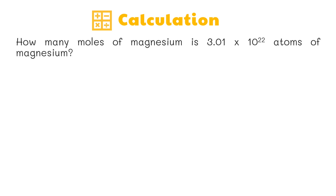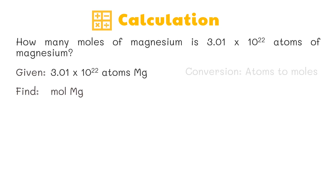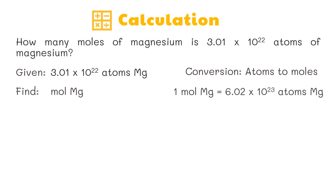Here's another sample problem: how many moles of magnesium is 3.01 × 10²² atoms of magnesium? The known number is 3.01 × 10²² atoms of magnesium. The unknown is the number of moles. The desired conversion is atoms to moles. The expression relating the units is: 1 mole equals 6.02 × 10²³ atoms of magnesium.